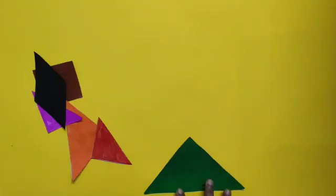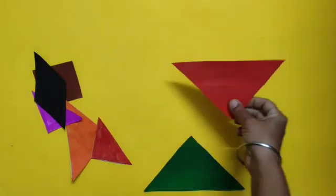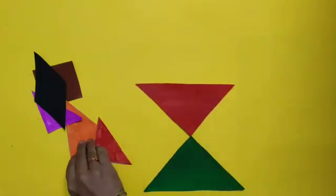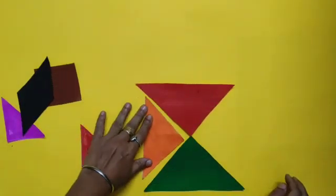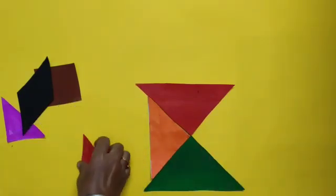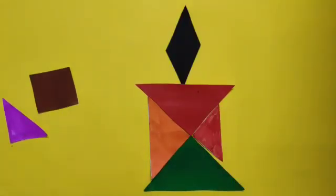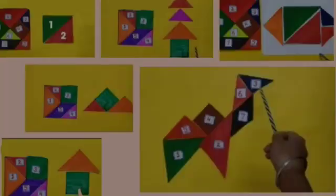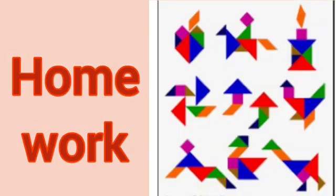Let's make one more figure, dear children. What does this figure look like? We are using different pieces of triangle for making this figure. Any guess for this figure, dear children? It looks like a candle. Today we have learned to make different figures with these pieces of tangram. These are some different figures made with pieces of tangram.